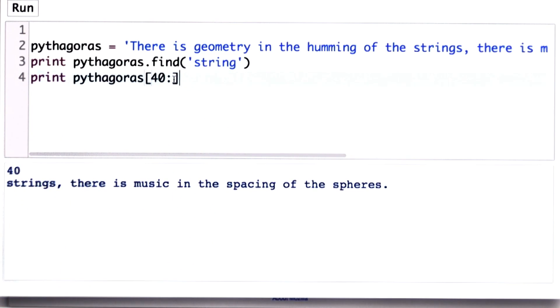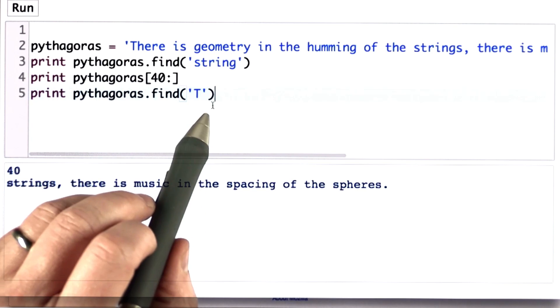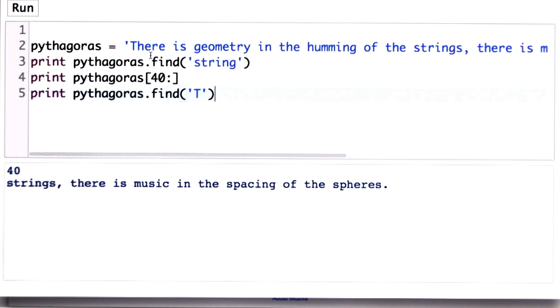We can search for other positions. If we search for Pythagoras, the single letter T, well, that matches the beginning. So we should find the result at position zero, which is what we get.